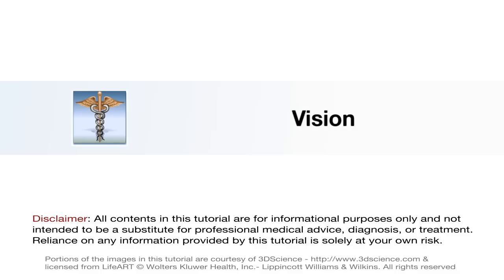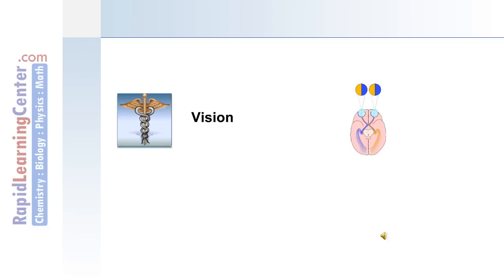We will now move on to discuss the special senses of the body, beginning with vision, including the structure of the eye, the accessory structures, and the visual pathways.